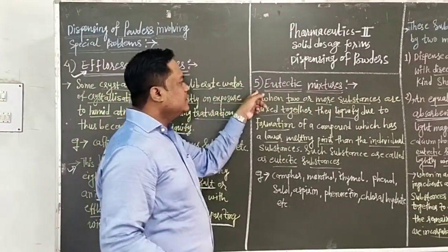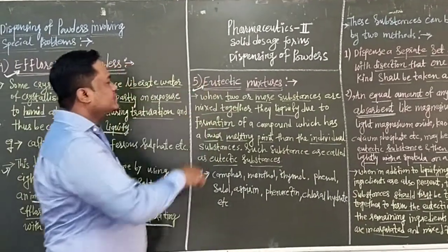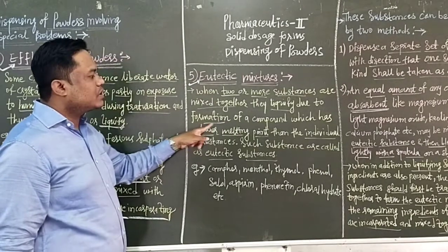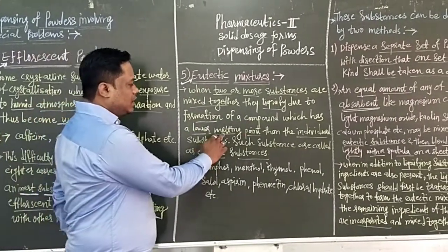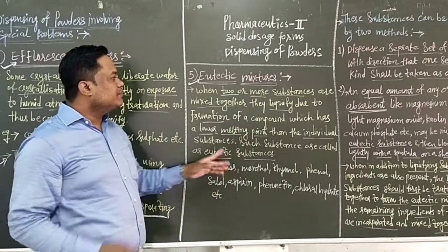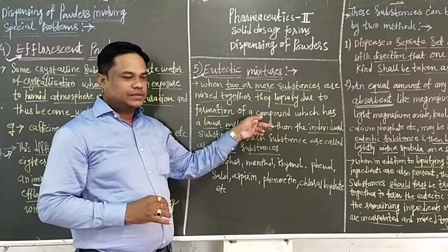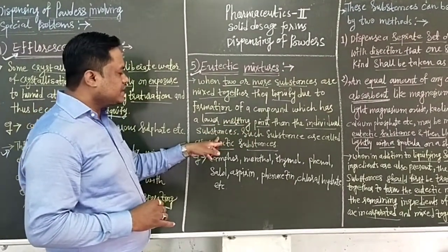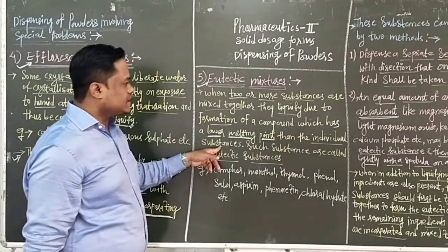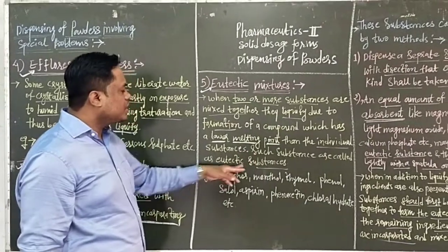The fifth special problem in dispensing powders is eutectic mixtures. When two or more substances are mixed together, they liquefy due to the formation of a compound which has a lower melting point than the individual substances. Such substances are called eutectic substances or eutectic mixtures. This lower melting point than the individual substances is the key characteristic.